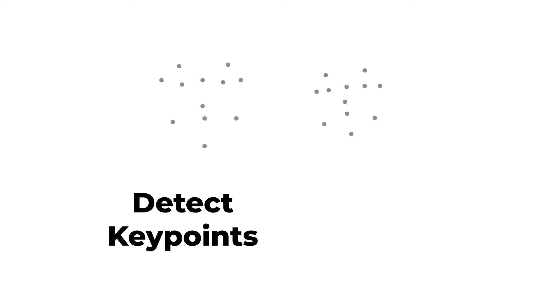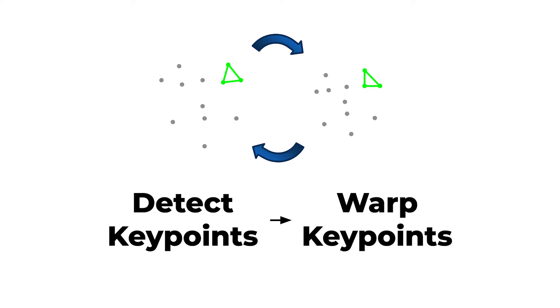To recap: detect key points first. Then, for every three points that make a triangle, warp it onto the corresponding triangle on the other face. After warping all key points, we have our face swap, which looks like this.